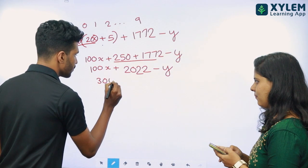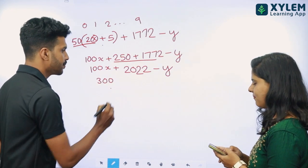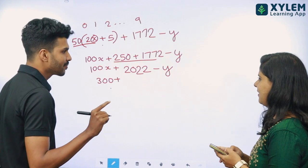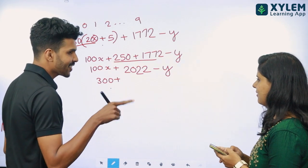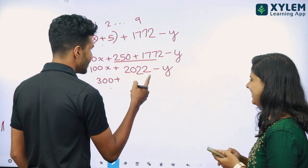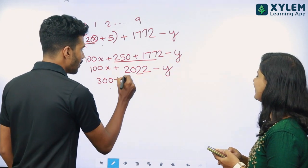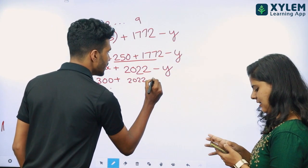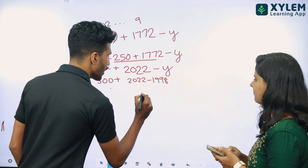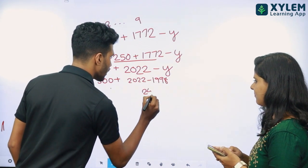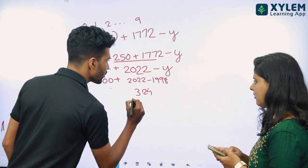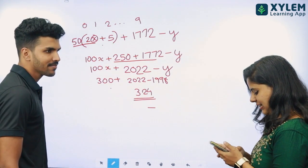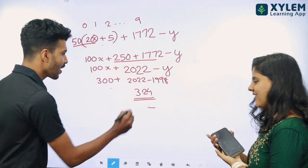300. Excel 3. 300. What's your name? 1998. Sathya. About 2022. 1998. I call it the number of 24. 300 plus 24 is 324. That's the number of 324.